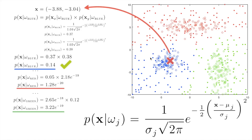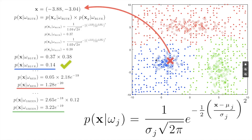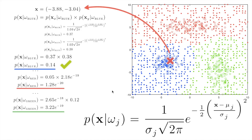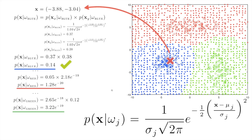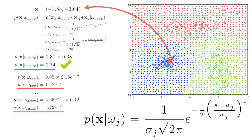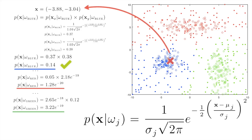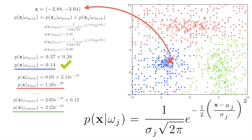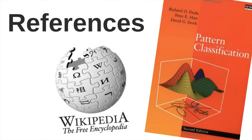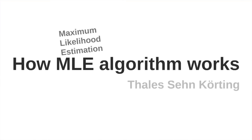For new points, we use this equation to get the probability for a point to belong to one of the classes. The biggest probability is used as the class of the point. The reference used here is the classical pattern classification book from Duda, Hart, and Stork, and also Wikipedia for some common terms. This is how the MLE algorithm works. Thank you and goodbye.